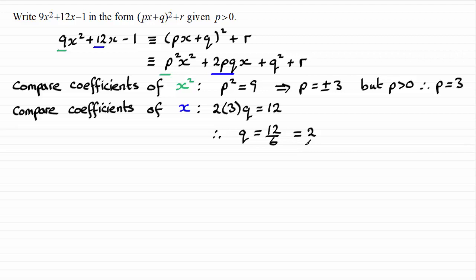So it's just a question now of getting the value of r. And we can do that by comparing the constants. So we've got the constant on the end here, negative 1. And we've got the constant over here. It's these two terms here, the q squared and the r. So by comparing those, and we now know the value of q is 2.